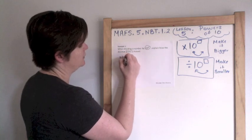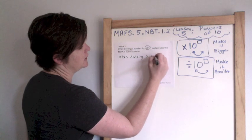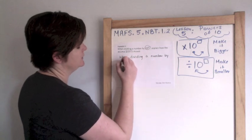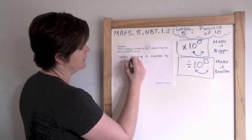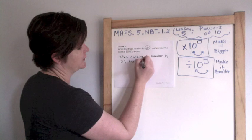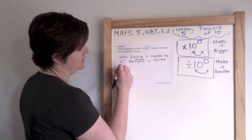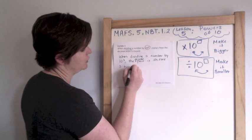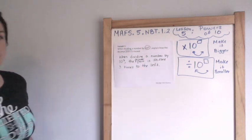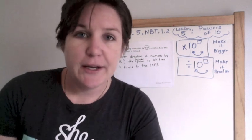So this is my open response item. When dividing a number by, remember to write in complete sentences, when dividing a number by 10 to the third power, the decimal point is shifted, or moved, three times to the left. Period. Don't forget to start with a capital letter when you are writing this too. That's it.